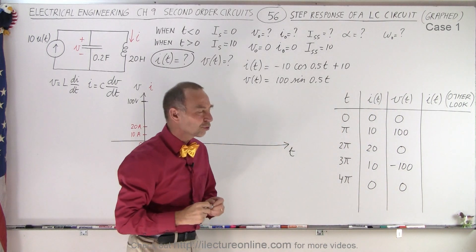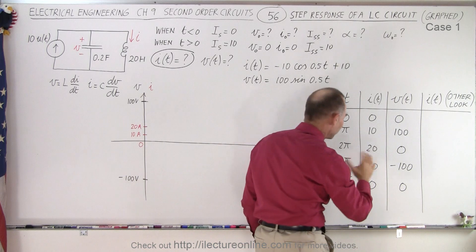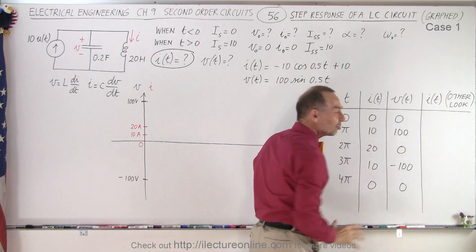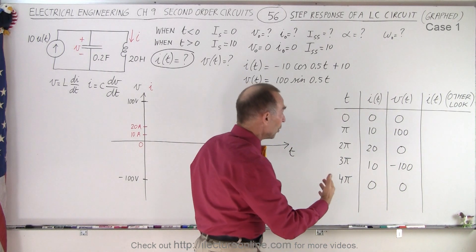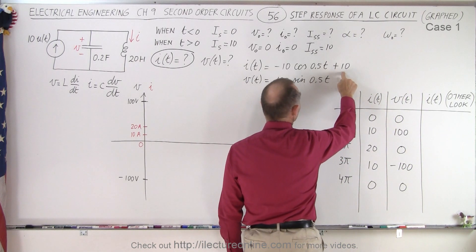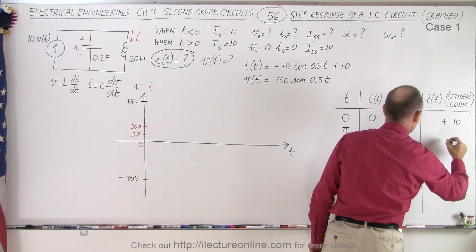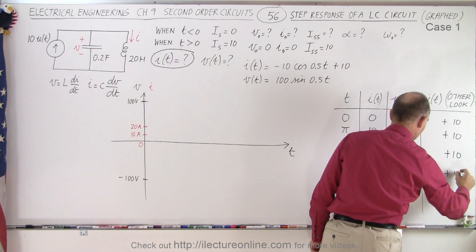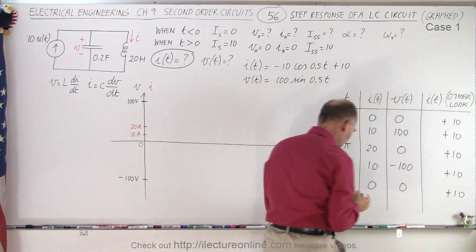This might seem strange — both current and voltage appear to be 0 at t=0 — but you'll see in a moment it actually makes sense. We're going to show the current in a different way by separating the steady-state portion, which is always +10, from the oscillating portion. So we'll write +10 for each time point and just track the oscillating part of the current separately.